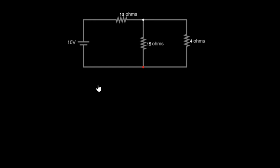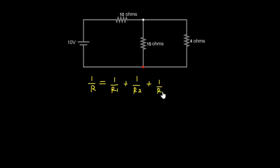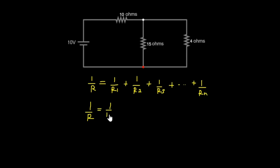Before we calculate the effective resistance for the whole circuit, we must first calculate the effective resistance for the 15 ohms and 4 ohms resistors which are in a parallel connection. The general formula for effective resistance in a parallel connection is 1 over R, where R represents the total resistance, equals the sum of the inverses of each resistance value.